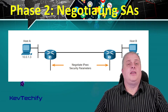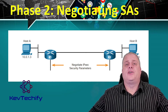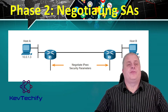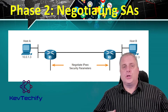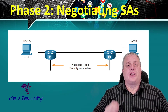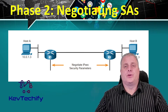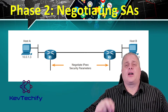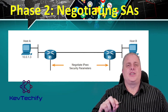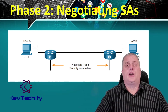IKE Phase 2 is called Quick Mode, and can only occur after IKE has established a secure tunnel in Phase 1. Quick Mode negotiates the IKE Phase 2 security associations. In this phase, the security associations that IPsec uses are unidirectional, therefore a separate key exchange is required for each data flow, one in each direction.